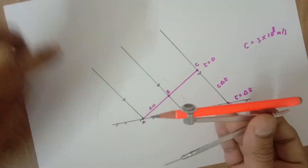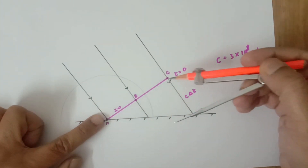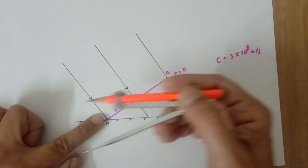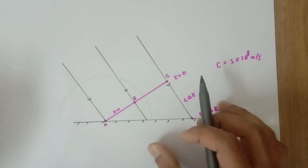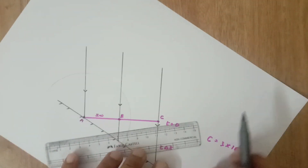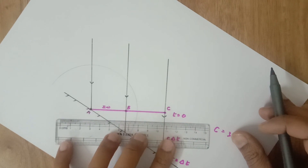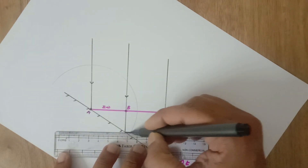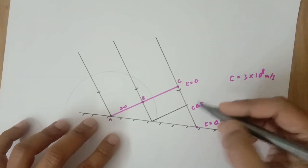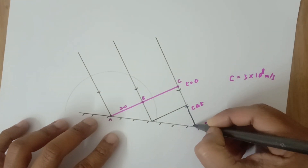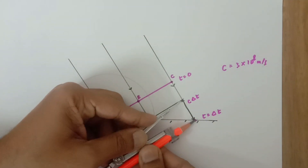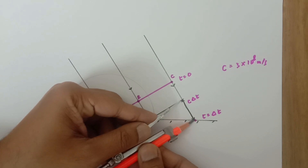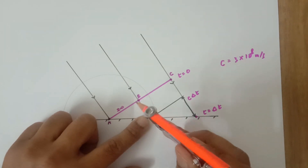This arc represents the spherical wave that has traveled distance c·delta t in time delta t. Now the tricky part is drawing the spherical wave for the intermediate point. I use a scale to measure a distance less than c·delta t — corresponding to the shorter path traveled — take that intermediate point as center, and draw another arc.